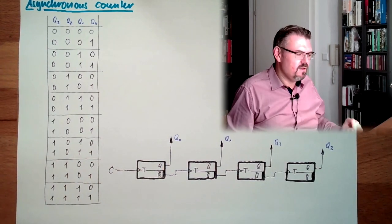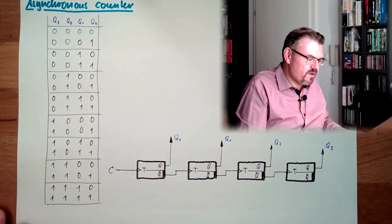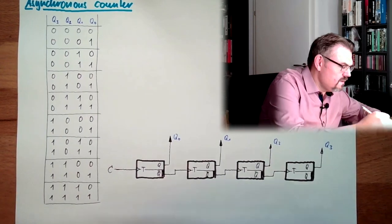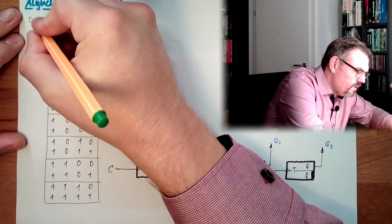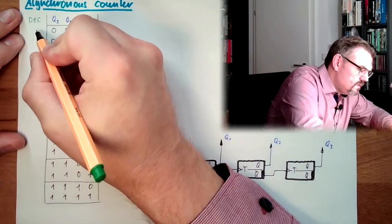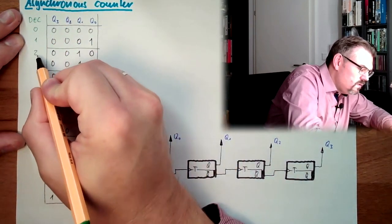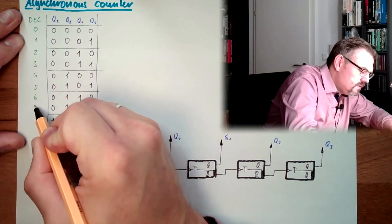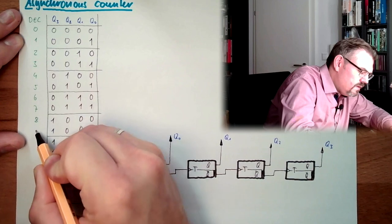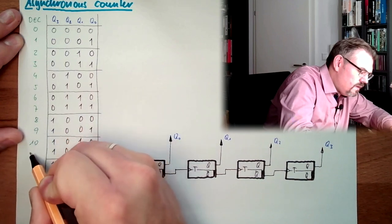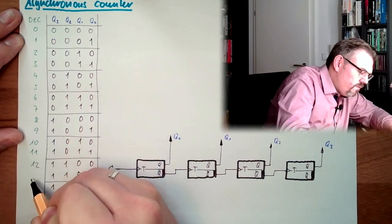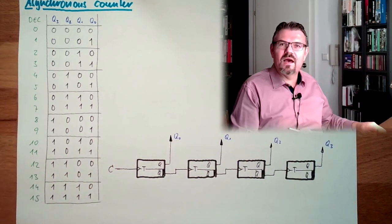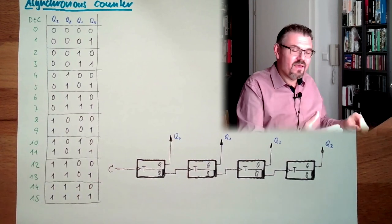If this is binary coded, this would be, this is 0, this is 1, this is 2, this is 3, 4, 5, 6, 7, 8, 9, 10, 11, 12, 13, 14, 15. This thing is counting, this thing is counting.